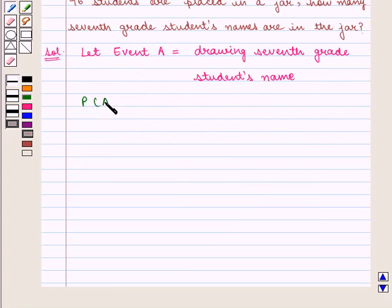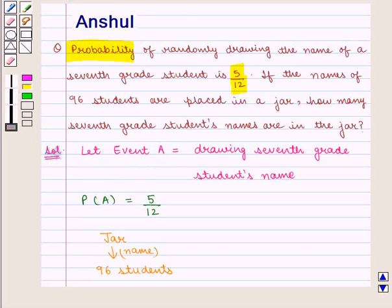Then, Probability of event A is equal to 5 upon 12 which is given in the question. Then, we are also given that the name of 96 students are there in the jar and we need to find out how many 7th grade students' names are in the jar.